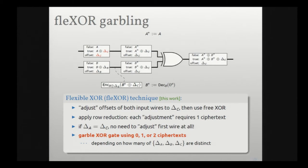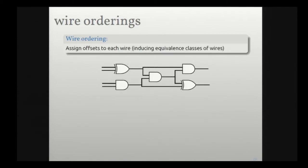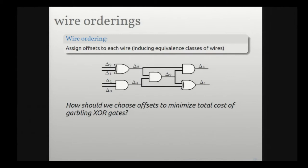Overall, our FlexOR construction garbles XOR gates with zero, one, or two ciphertexts depending on how many offsets match up. If more offsets are the same, fewer ciphertexts are needed. This raises the question: where do the offsets come from? We define a wire ordering as a way to assign offsets to different wires in the circuit — some wires get offset delta_1, others delta_2, and so on. Different assignments yield garbled circuits of different sizes, giving us an optimization problem: assign offsets to each wire to minimize the total size of the garbled circuit.